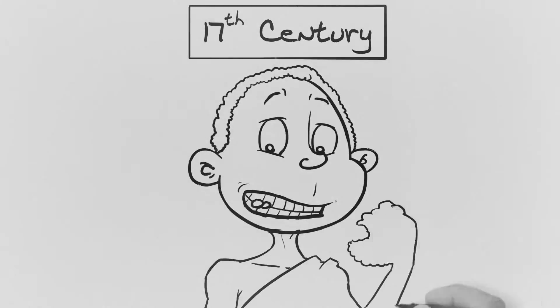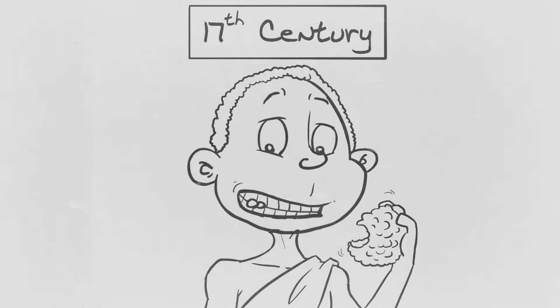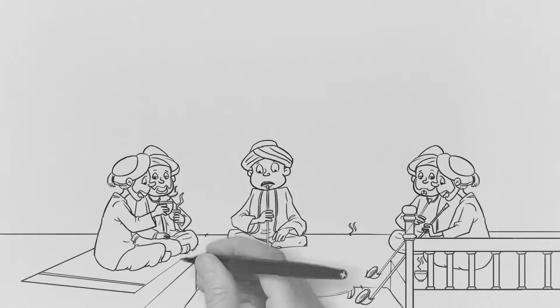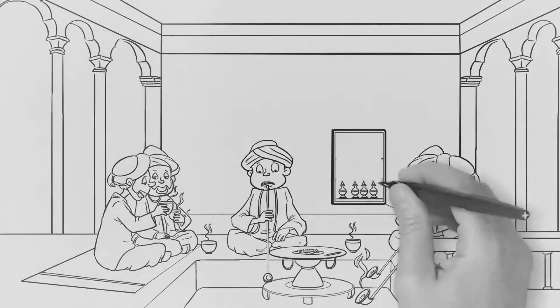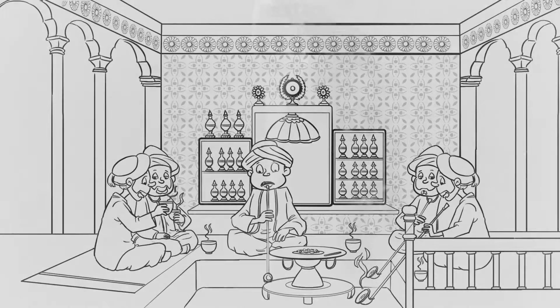In the 17th century, man went from chewing the crushed beans and berries to hot beverages at coffee stalls, shops, and fancy houses in Egypt, Syria, and Turkey.